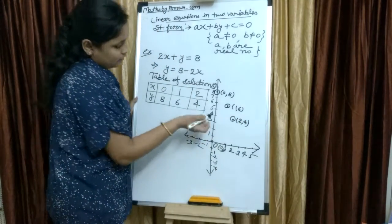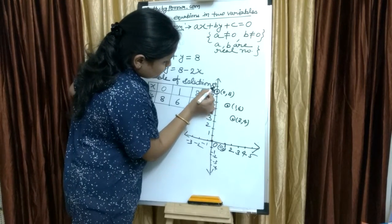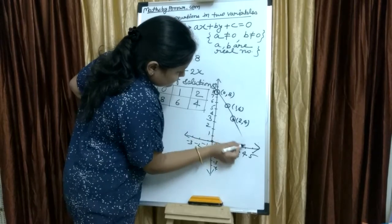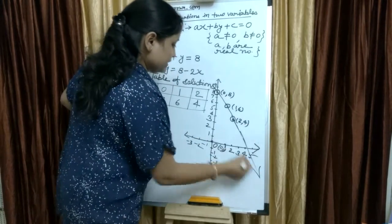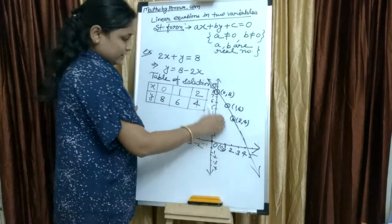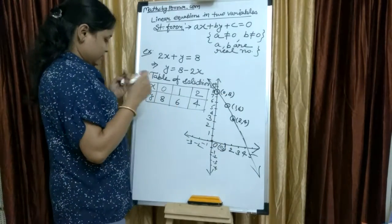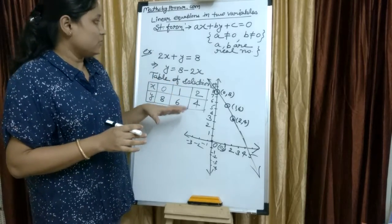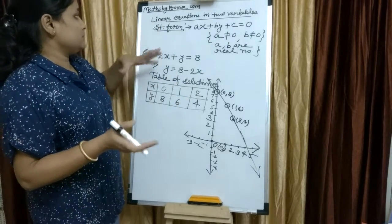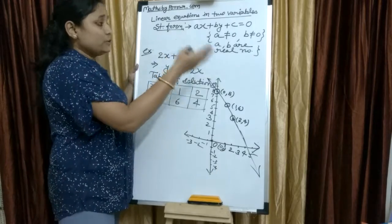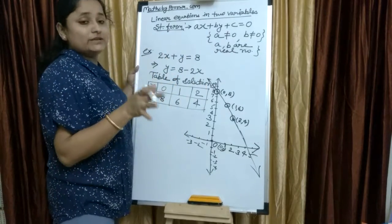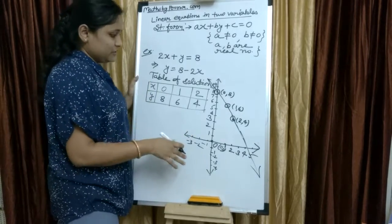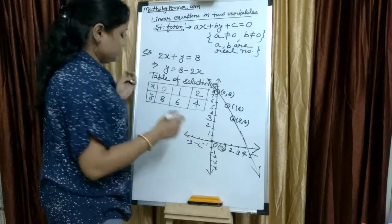Then, you have to join with a ruler, like this and extend this. So, this line is obtained. A line which has a linear equation in two variables has so many solutions, means infinitely many solutions. So, these three solutions are sufficient. And now, like this, you can draw.